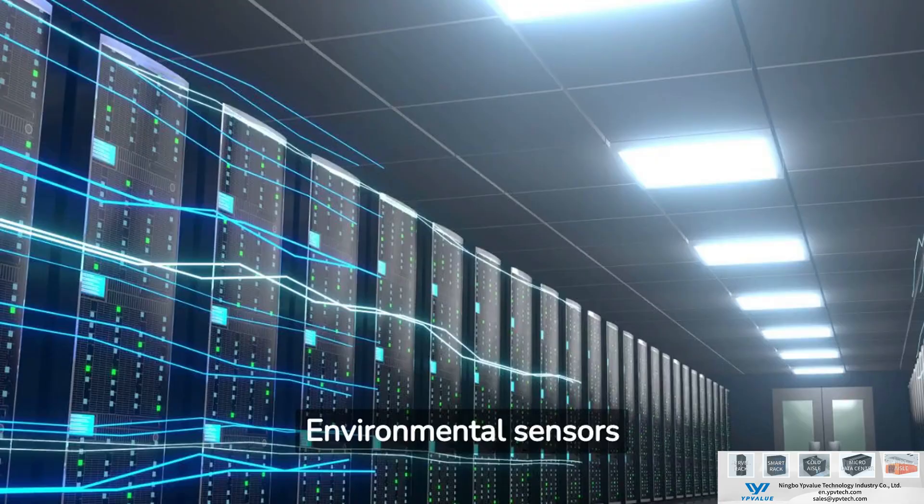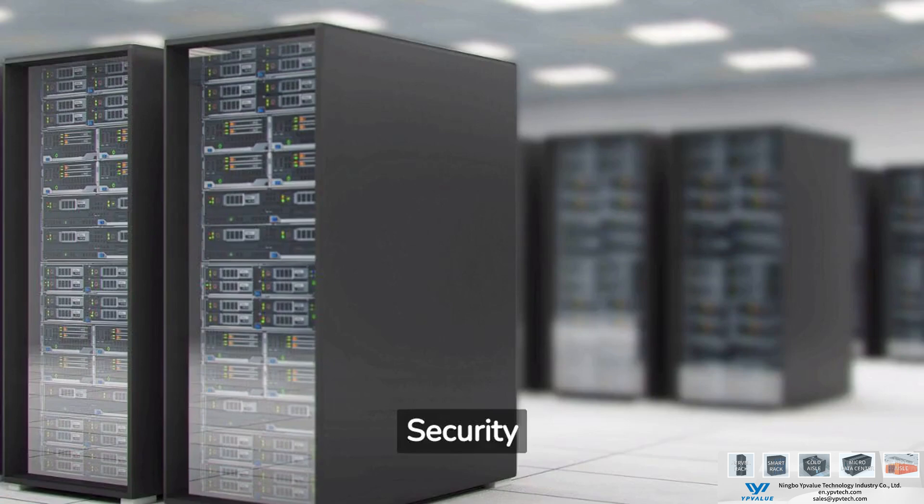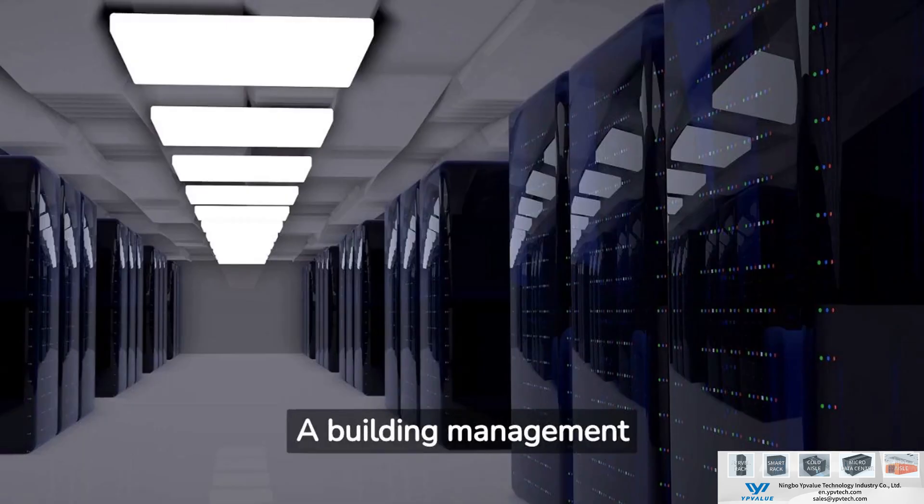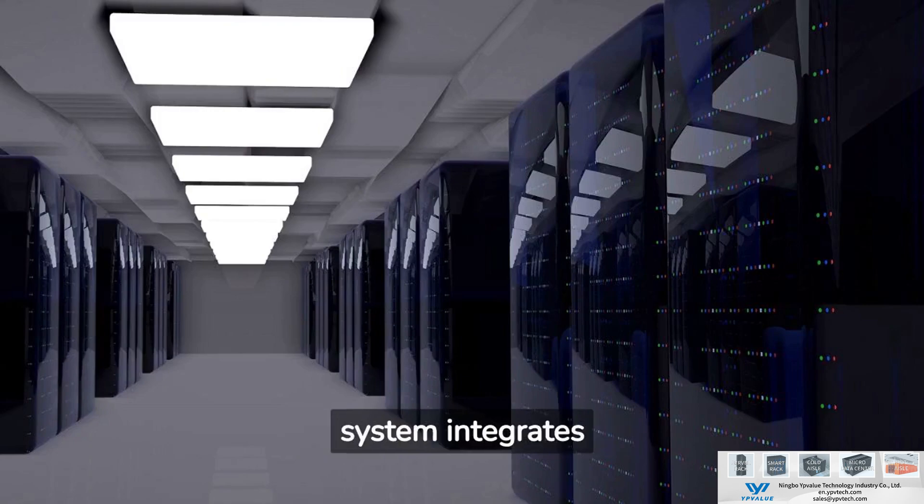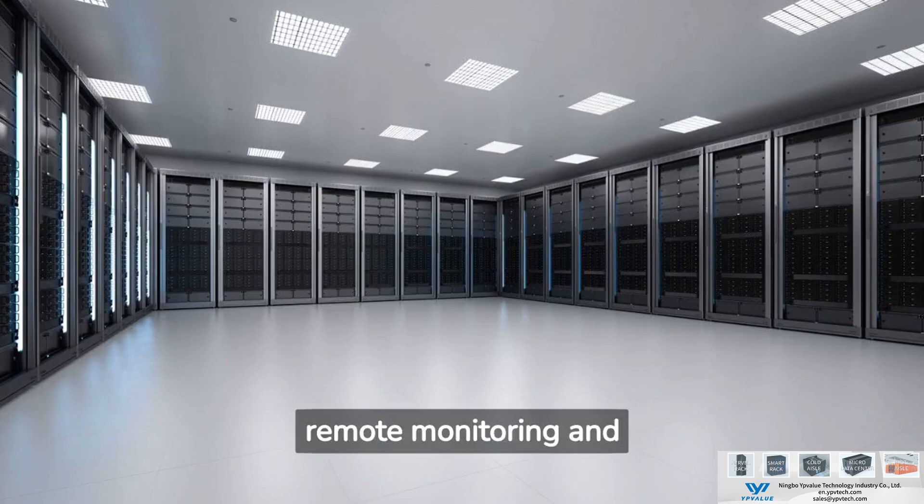Environmental sensors track temperature, humidity, water leakage, and other parameters. Security cameras and access control protect the facility. A building management system integrates controls for mechanical and electrical equipment to enable remote monitoring and management.